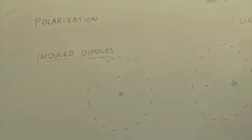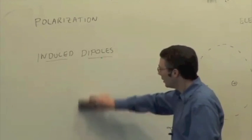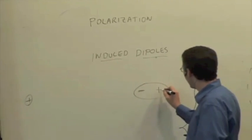And let me now draw it in this schematic form that we're going to use. Here's our positive charge. Here's the induced dipole, which is now negative on one end and positive on the other.